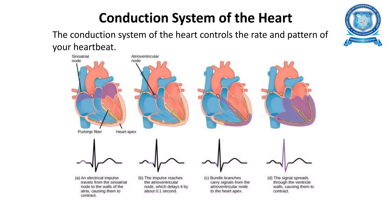The conduction system of the heart, shown here with ECG waveforms, involves Purkinje fibers. First, the electrical impulse travels from the sinoatrial (SA) node to the walls of the atria, causing them to contract. Next, the impulse reaches the atrioventricular (AV) node, which delays it by about 0.1 seconds. Then bundle branches carry signals from the AV node to the heart apex, and the signal spreads through the ventricular walls causing them to contract.